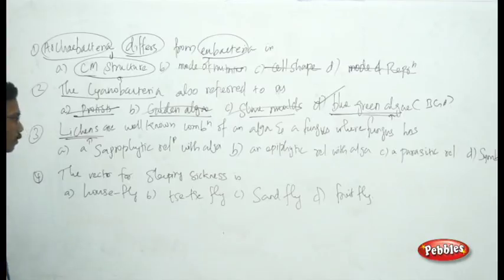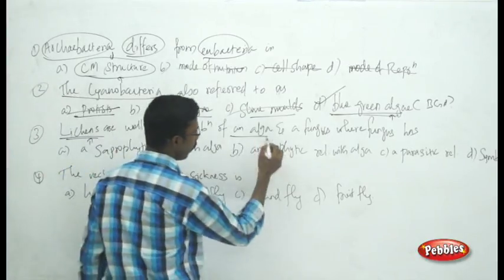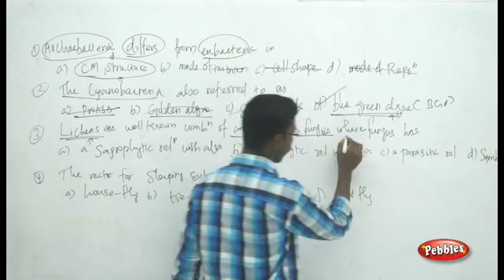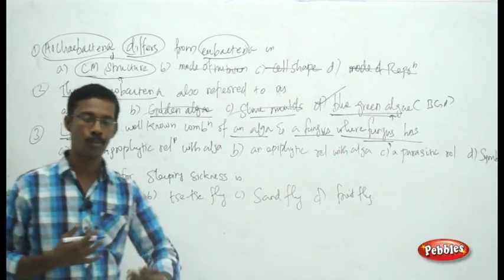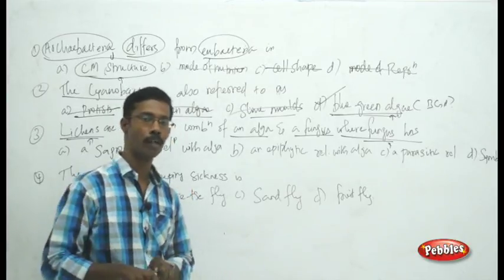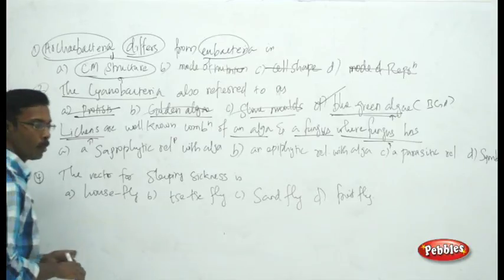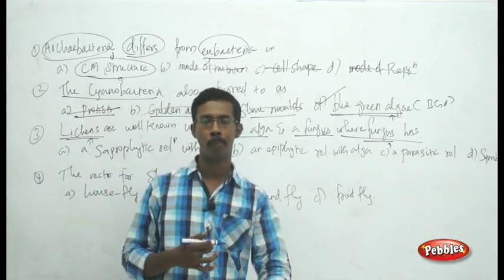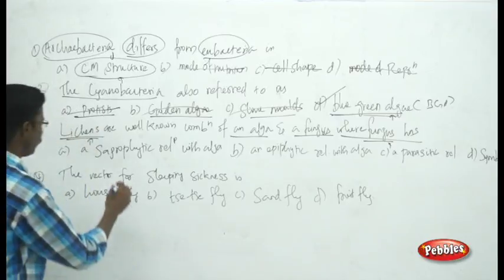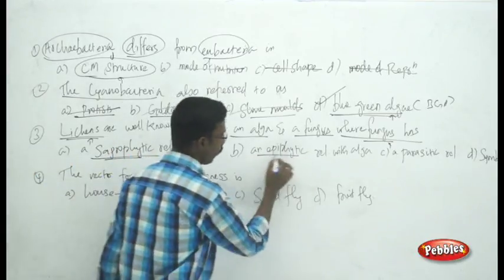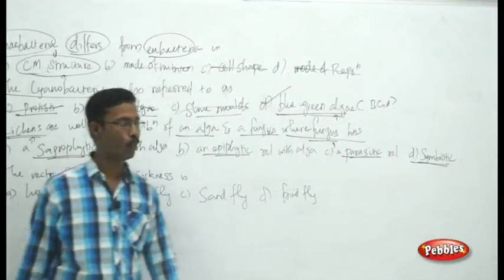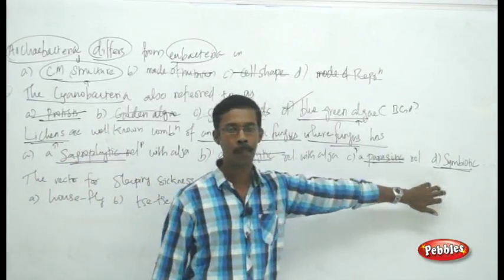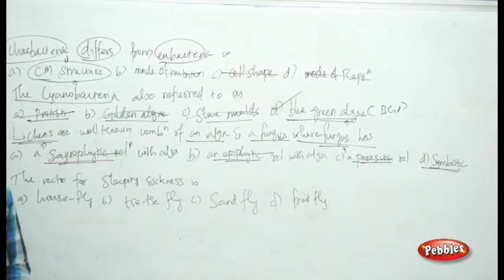The next question: lichens are a combination of algae and fungi — what is the role of the fungus? The choices are saprophytic, epiphytic, parasitic, and symbiotic. Lichens involve a symbiotic association where both partners benefit from each other. We eliminate parasitic, epiphytic, and saprophytic. The fungus has a symbiotic relationship with the algae.